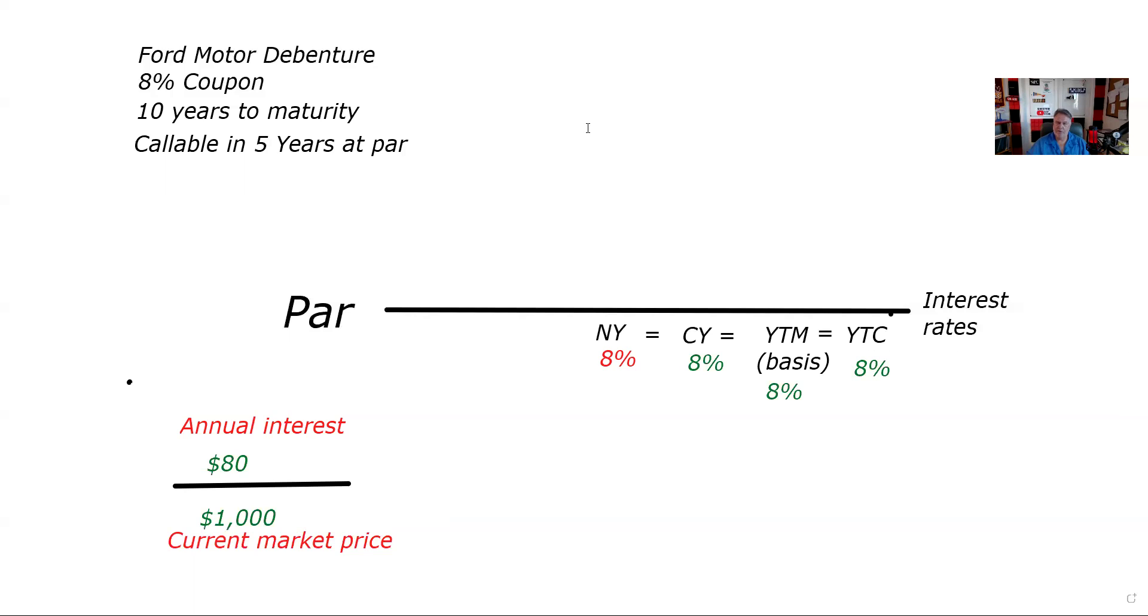Now here is most often the test question. What they love to do on the test is give you a price and make you find a yield or give you a yield and make you find the price. Now this is called interpolation, not testable. All right, so boom. And that's what the teeter-totter is wonderful about. The teeter-totter turns judgment questions to aim and shoot, point and click questions.